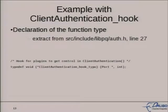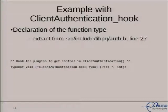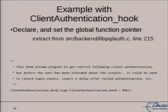Here is an example of how it is put in PostgreSQL source code. This is an extract of the oat.h file in Postgres. You have a type declaration which shows you how to write this function — you need a function with two arguments: a structure called port, and an integer. Then in the PostgreSQL source file, there is a declaration of a variable called client_authentication_hook, which is set to null.